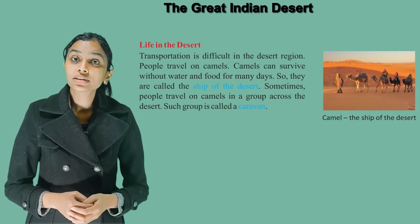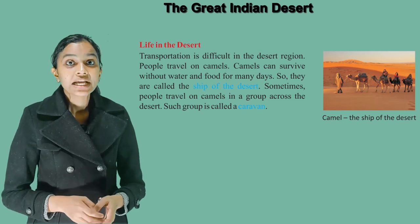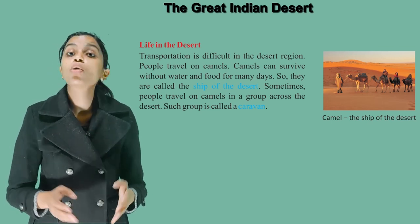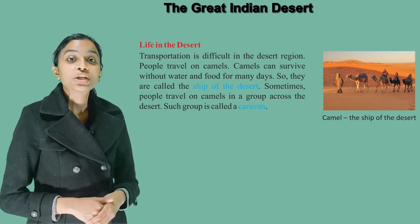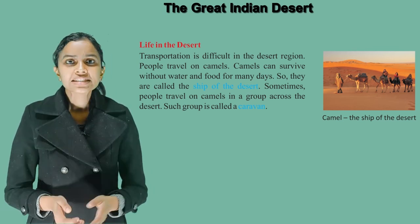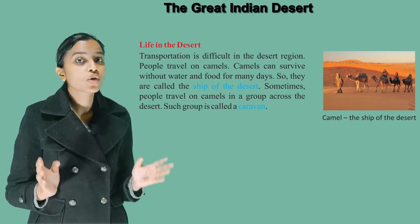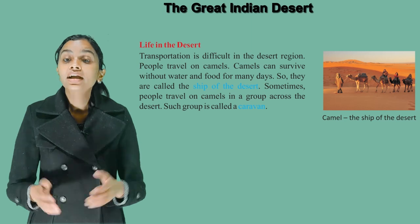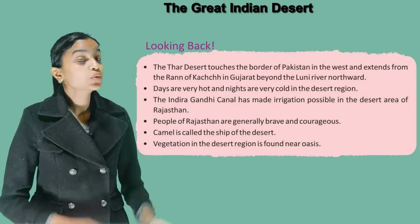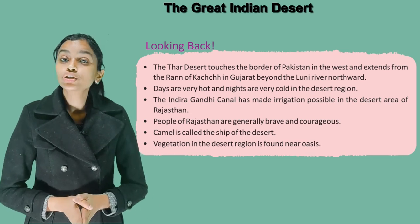Transportation is difficult in the desert region. People travel on camels. Camels can survive without water and food for many days, so they are called the ship of the desert. Sometimes people travel on camels in a group across the desert — such a group is called a caravan.